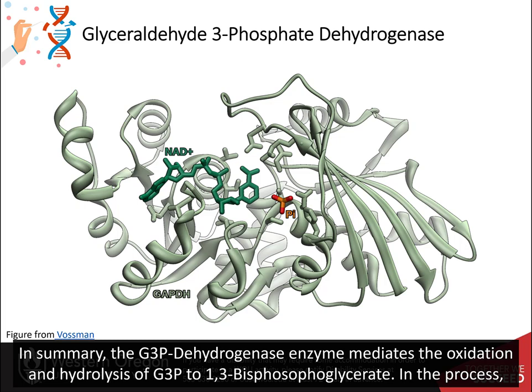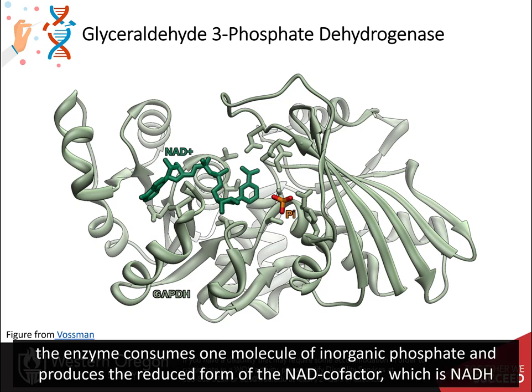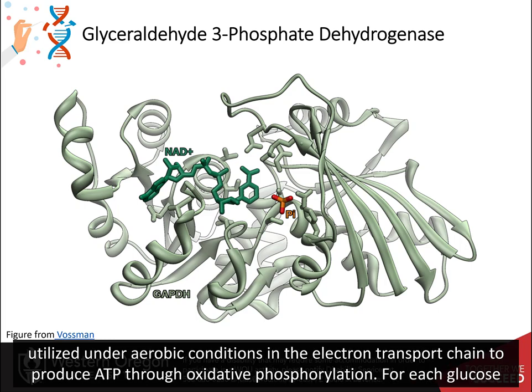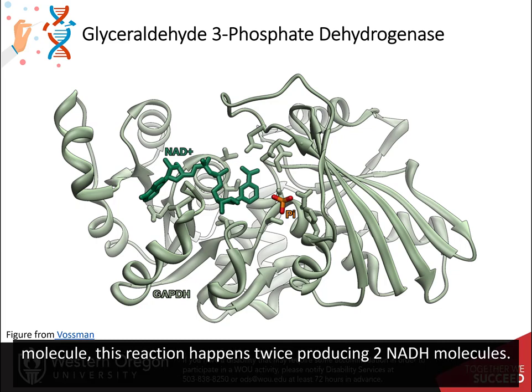In summary, the glyceraldehyde 3-phosphate dehydrogenase enzyme mediates the oxidation and dehydration of glyceraldehyde 3-phosphate to 1,3-bisphosphoglycerate. In the process, the enzyme consumes one molecule of inorganic phosphate and produces the reduced form of the NAD cofactor, which is NADH, plus the extra proton released by the inorganic phosphate during the dehydration part of the reaction. The NADH carrier will then be utilized under aerobic conditions in the electron transport chain to produce ATP through oxidative phosphorylation. For each glucose molecule, this reaction happens twice, producing two NADH molecules.